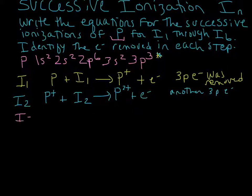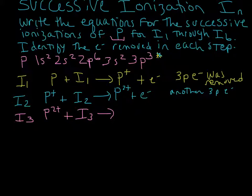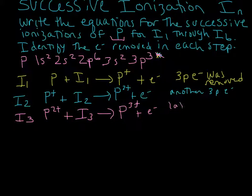Now let's write out I3. We take the phosphorus 2+ cation from the previous ionization, put in I3 — which is higher than I2 because every time we take away another electron it gets harder and harder to remove one — and we end up with phosphorus 3+ and an electron. We removed the last of the 3p electrons. Now that all three 3p electrons are gone, we can cross them out so we don't get confused as we keep going.